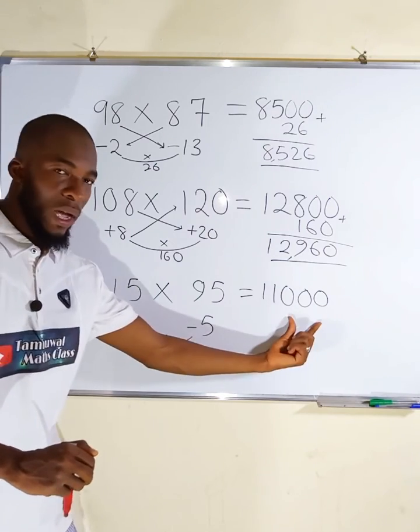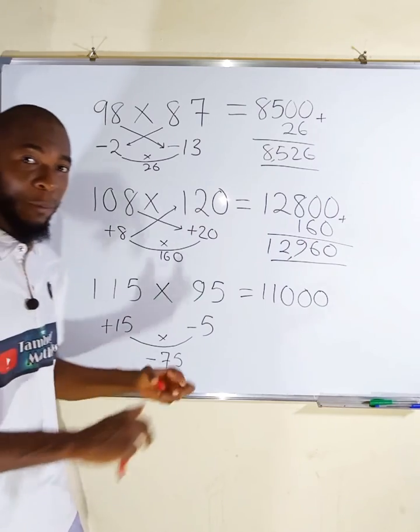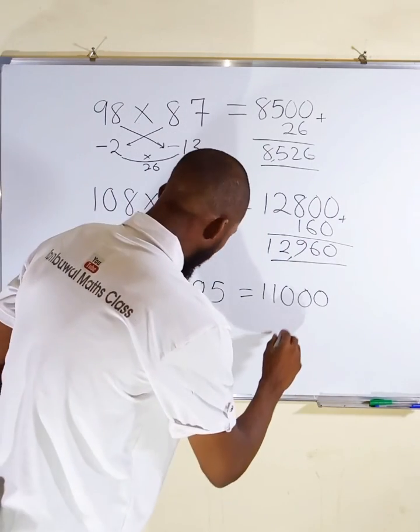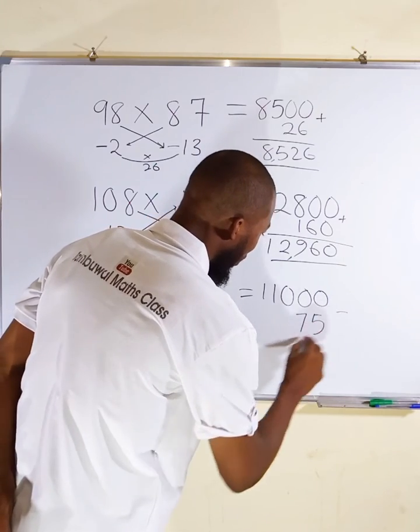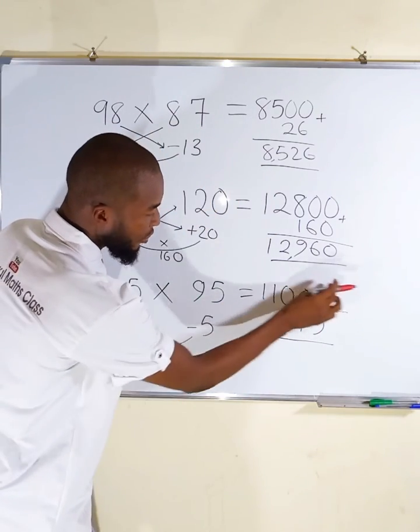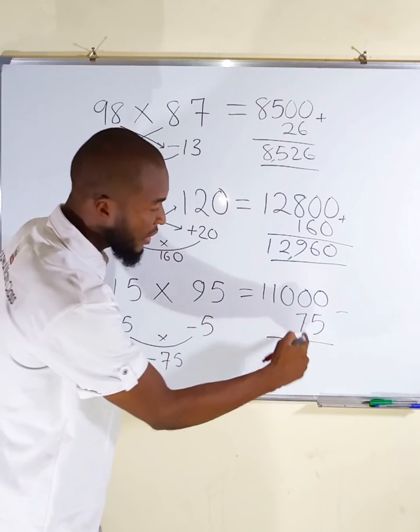Now instead of adding, you subtract because this value is negative. This time around we subtract 75 here. This is subtraction. If you take one bundle from the first number, this becomes 10. 10 minus 5 is 5. We have 9 left here. 9 minus 7 is 2.